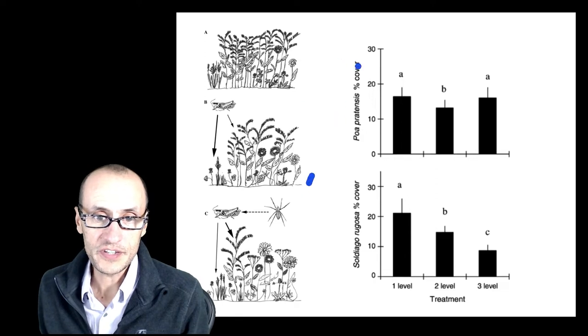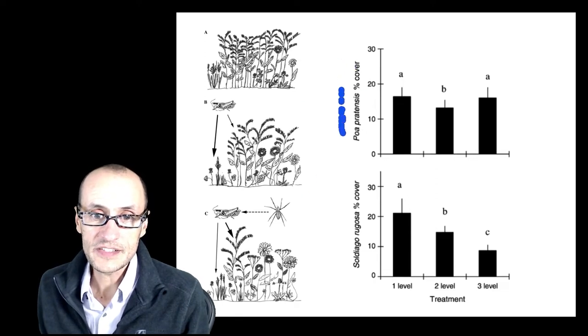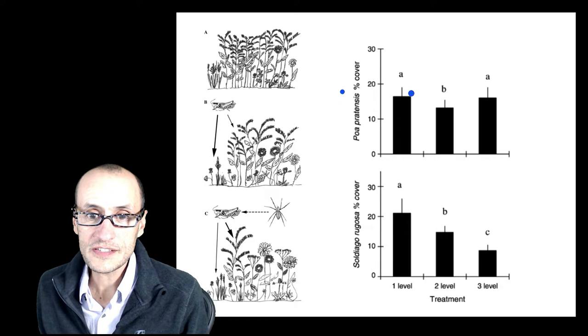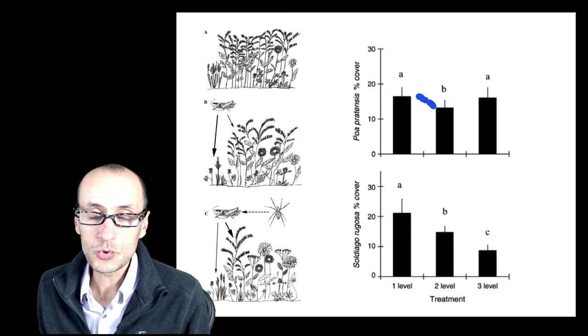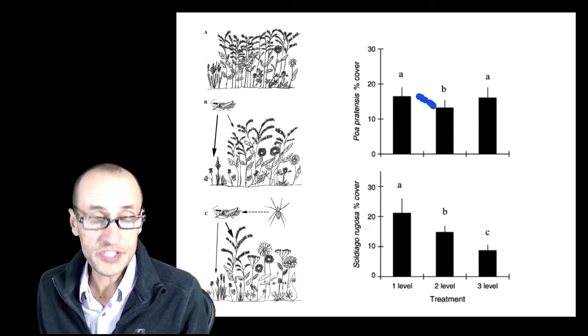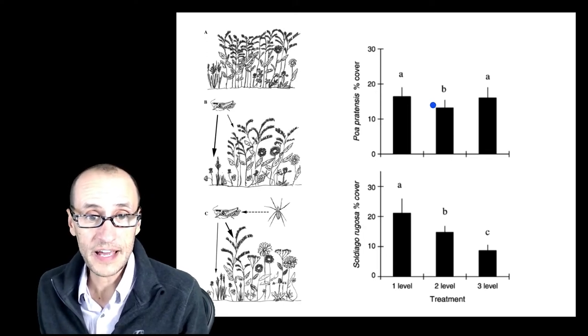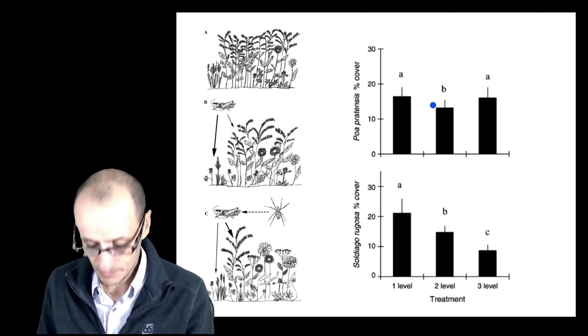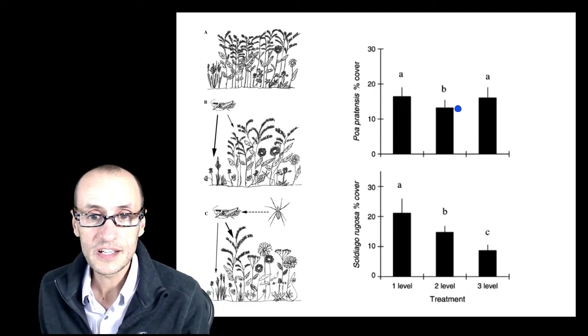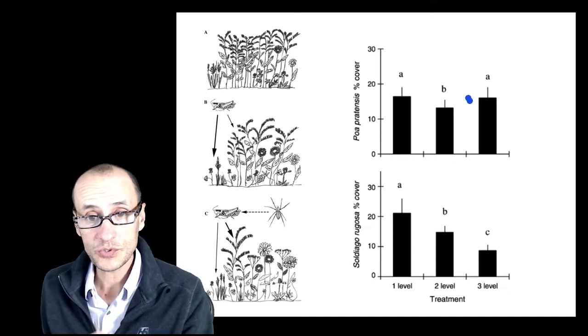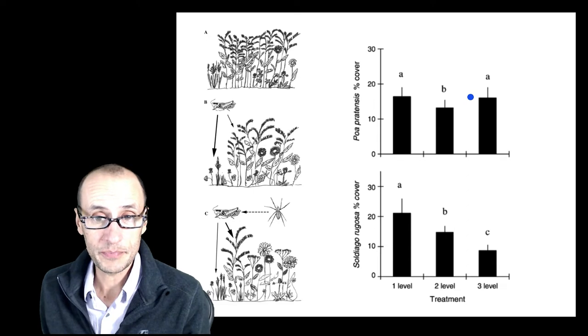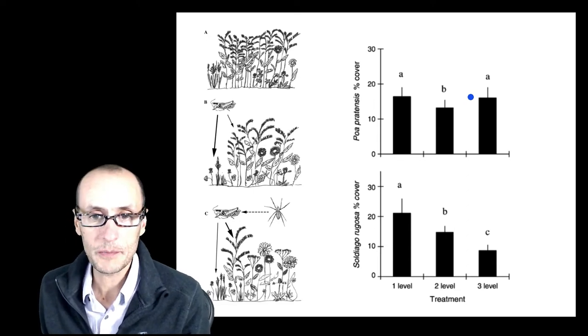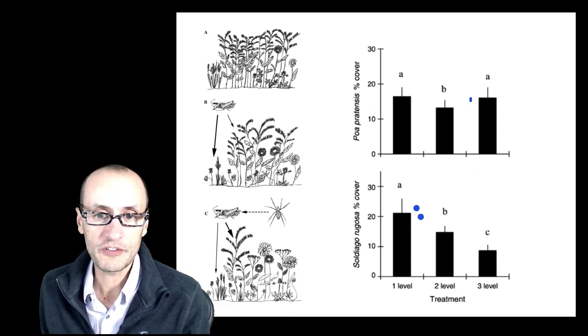Well, here's another consequence of this. And that is the one that there's grasses there. In the two-level treatment, that is, there's only herbivores that are there. There's a decrease in the amount of grass that ultimately takes over, that ultimately is present in these arenas. But then when you add the spiders in, either risk or actual spiders, there's a higher percent of grasses. And these are experiments that actually went on for a fair amount of time.